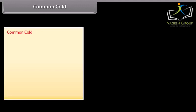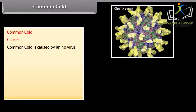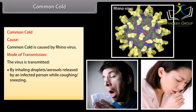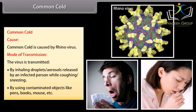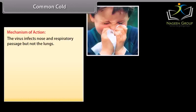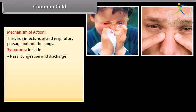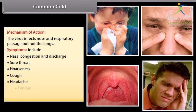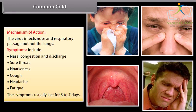Common cold. Common cold is caused by rhinovirus. Mode of transmission: the virus is transmitted by inhaling droplets and aerosols released by an infected person while coughing, sneezing, or by using contaminated objects like pens, books, mouse, etc. Mechanism of action: the virus infects nose and respiratory passage but not the lungs. Symptoms include nasal congestion and discharge, sore throat, hoarseness, cough, headache, and fatigue. The symptoms usually last for 3 to 7 days.